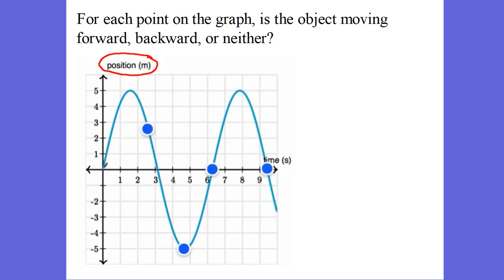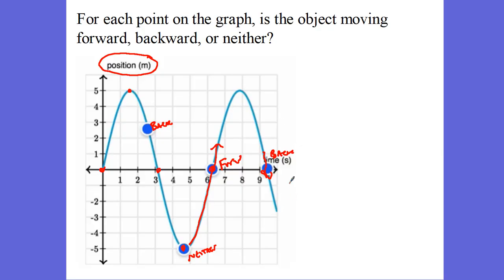This is a position-time graph. We start out at a position of zero, moving forward all the way to five meters. Then we are moving backwards all the way back to position zero. Then right here, we're neither moving forward nor backwards because we are changing direction. And then we're moving backwards all the way to zero. At any instantaneous point, you determine direction by whether the position is continuing to increase or decrease.